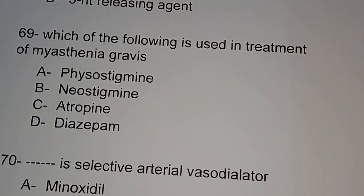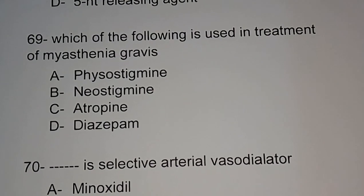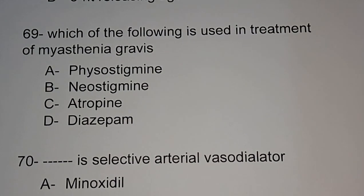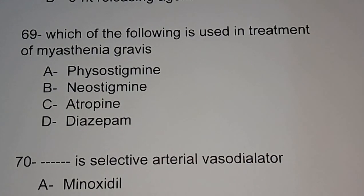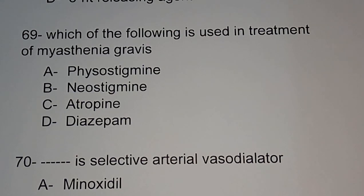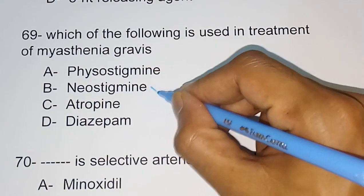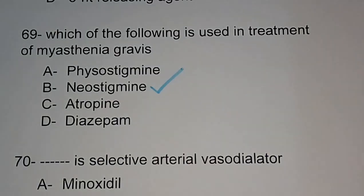Question number 69: which of the following is used in the treatment of myasthenia gravis? Options are physostigmine, neostigmine, atropine, diazepam. The correct answer is neostigmine.